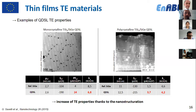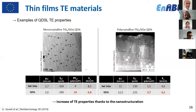Looking at the thermoelectric properties of the titanium silicide-based QDSL, we measured both monocrystalline and polycrystalline structures and compared them to a silicon-germanium layer without nanostructuration but with the same germanium content and doping. We simultaneously obtained a higher power factor and a lower thermal conductivity in both cases — a very good result demonstrating the increase in thermoelectric properties thanks to nanostructuration.